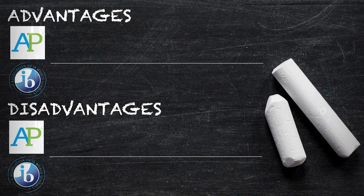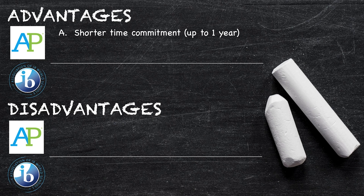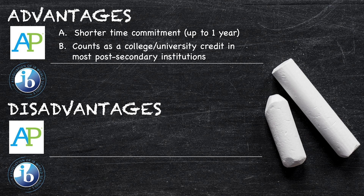Now let's take a look at the advantages and disadvantages of both programs. One of the biggest benefits of AP Economics is that it's a shorter program that can be completed in just one year. Students can choose to take either microeconomics or macroeconomics, or both, and they take a final exam at the end of the course in May. This can earn them college credit if they score well — specifically, a four or a five on the AP econ tests.